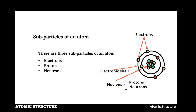Around the nucleus, as you can see, there are ring-like structures called electronic shells. On the electronic shells there are electrons. In summary, atomic structure shows three sub-particles of an atom and their locations.